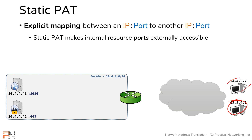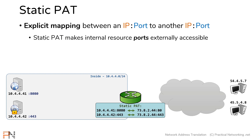For the hosts on the outside to access these services, we can't have them send something to the private IP addresses directly because their packets would be dropped on the internet. We have to use a correlating public IP address. So a static PAT configuration would tell our router that IP address 10.4.4.1, port 8080, should always be translated to and from public IP 73.82.44, port 80, and private IP 10.4.4.2, port 443, should always be translated to public IP 73.82.44, port 443.